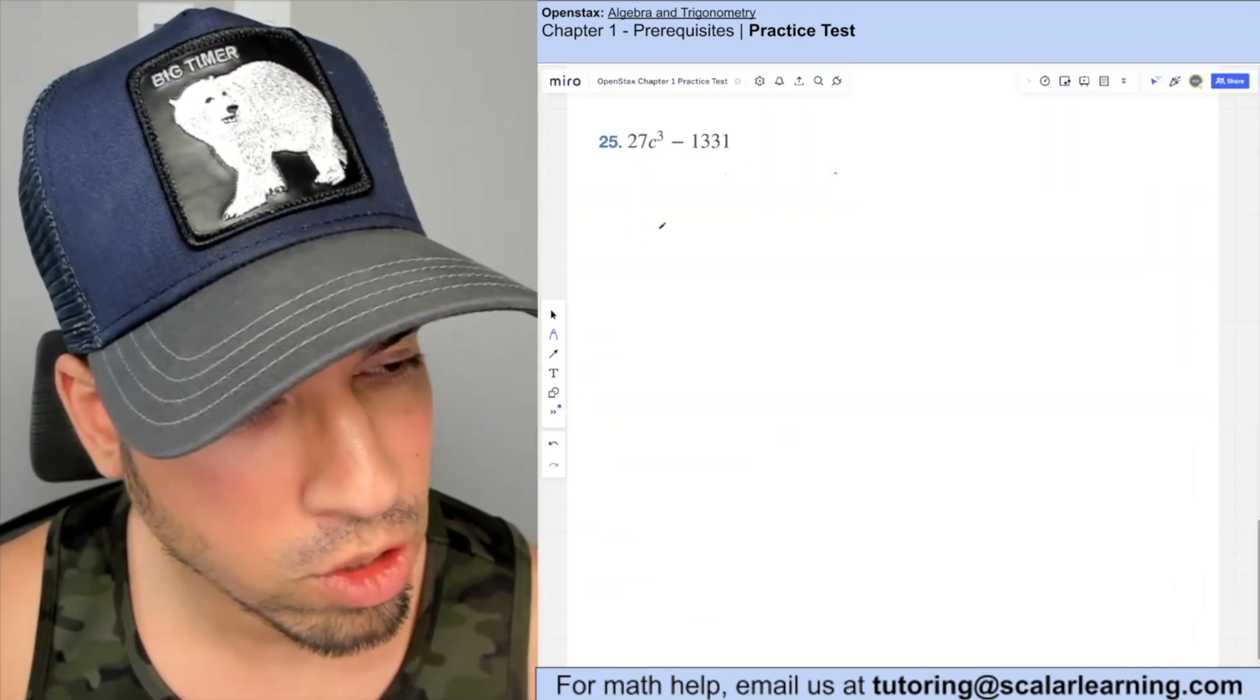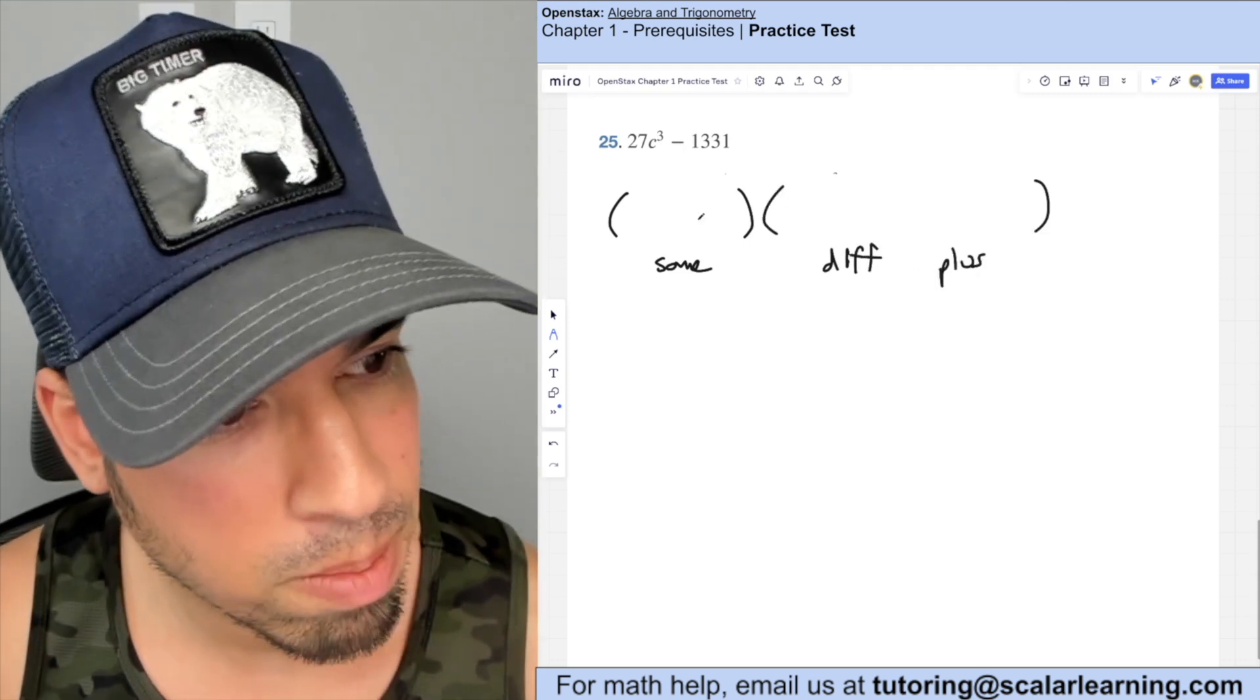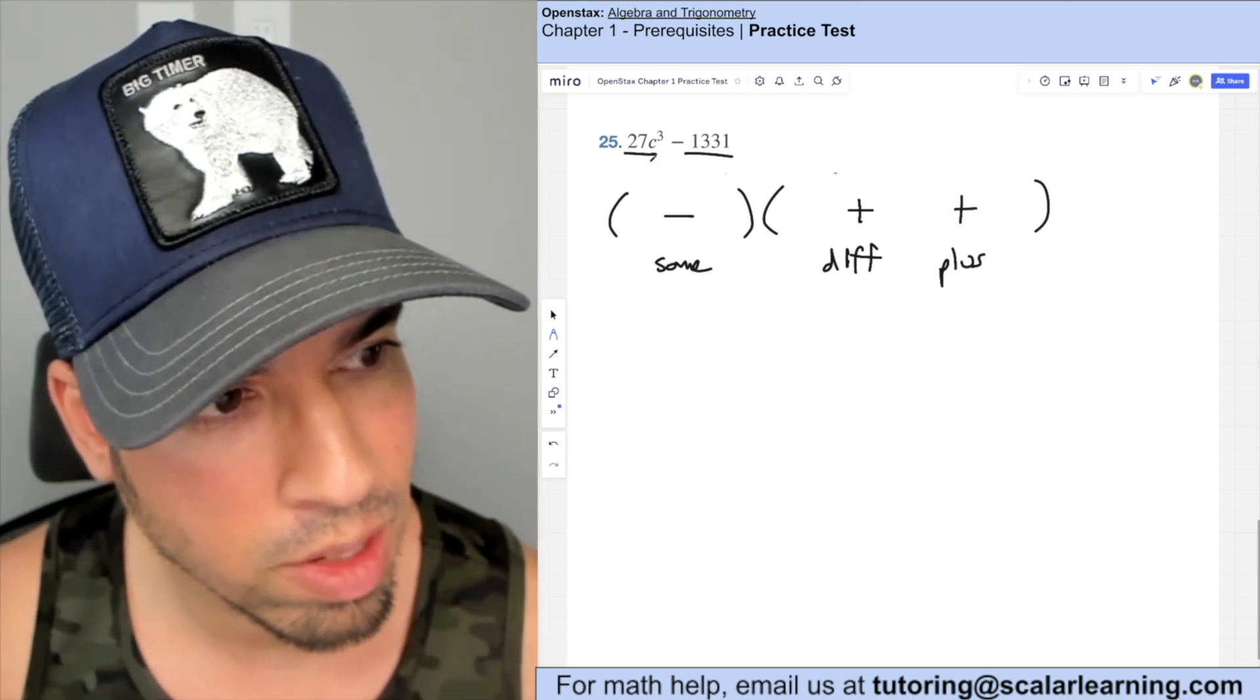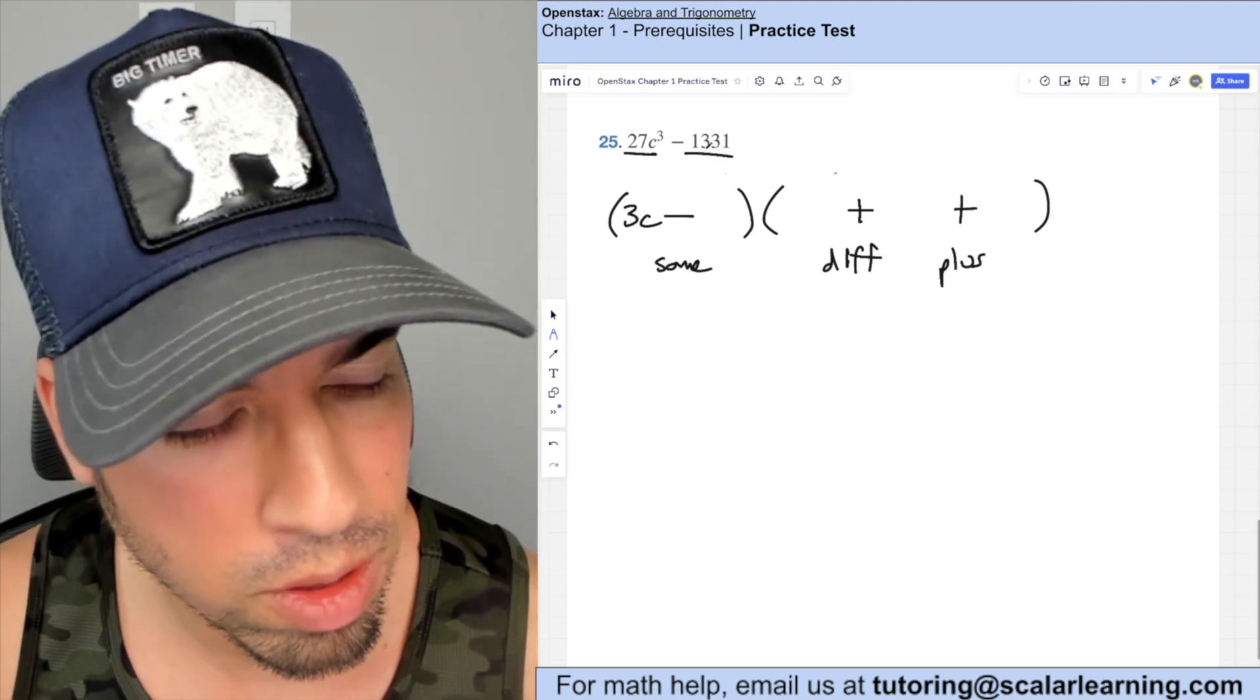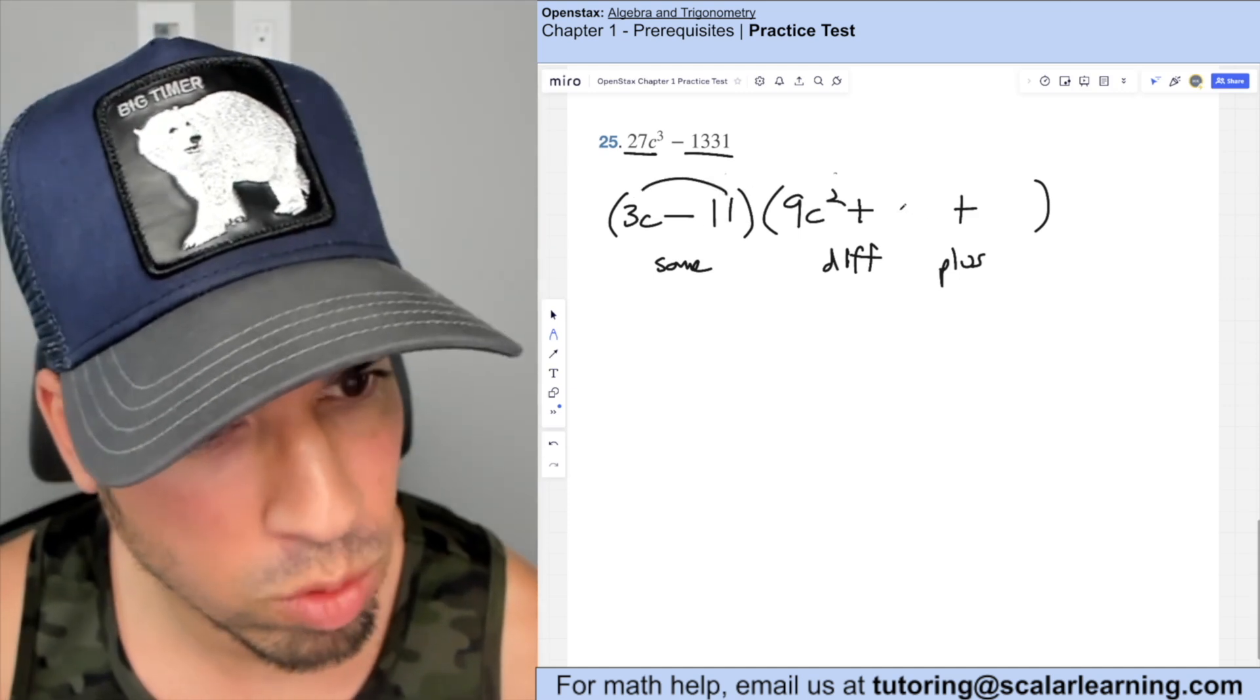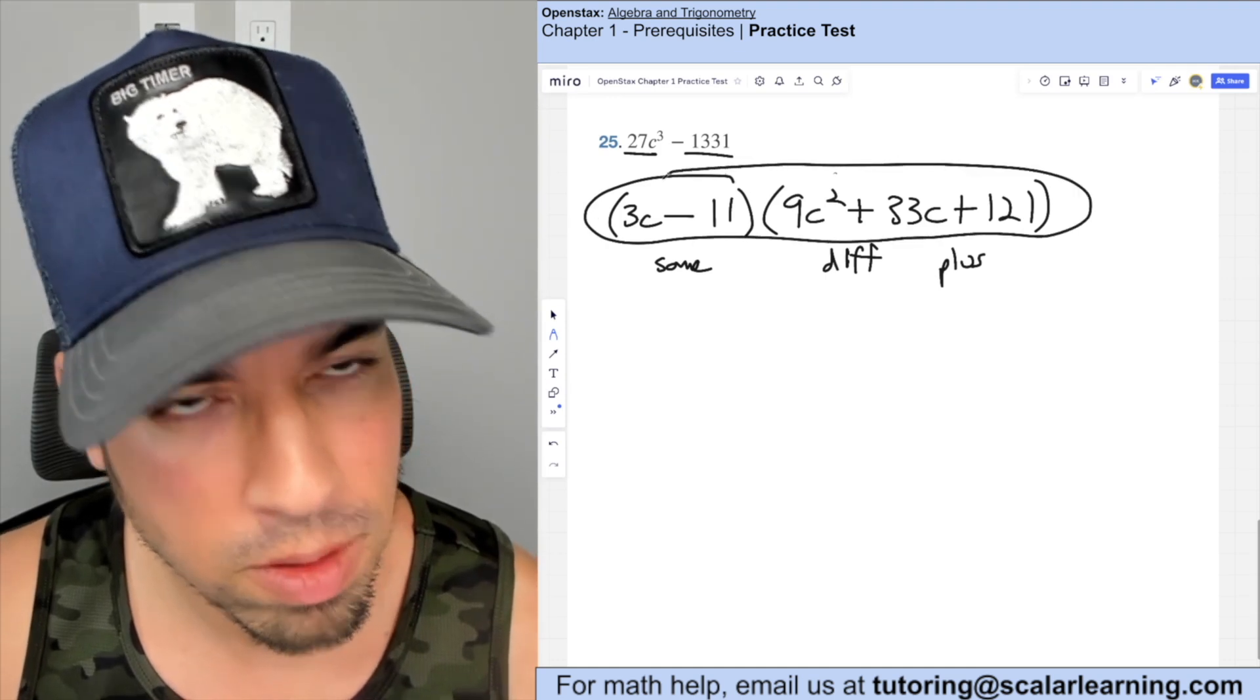Here we have a difference of cubes. So to factor a difference of cubes, if you remember, this whole thing, it's called same different plus, I'm gonna show you what that means. So since this is a minus, that's the same. This is different, different from minus is a plus. And then this last one is always plus now what goes in here. So we take the cube root of each of these cube root of 27 c cubed is three c right three c cubed is that and the cube root of 1331 is actually 11. Now over here, we get this first term squared. So three c squared is nine c squared, and we get these two multiplying each other, which is 33 c in the middle. And then at the end, we get this term squared, which is 121. And this is the final factored form done here.